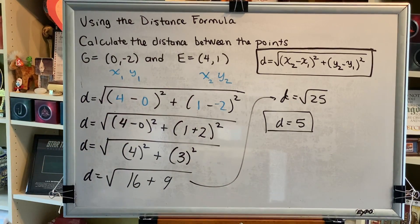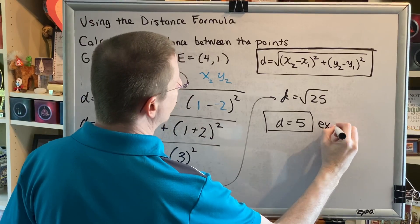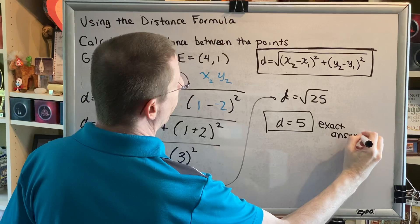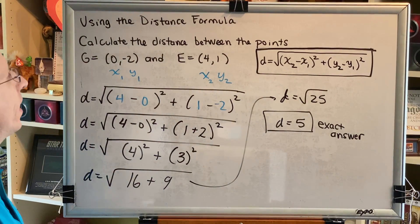So, the distance between the points is 5. This is an exact answer. The moment you round, your answer is no longer exact.